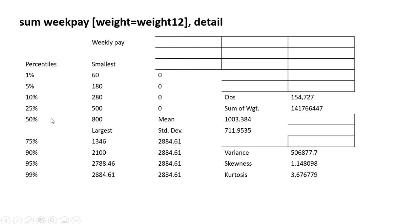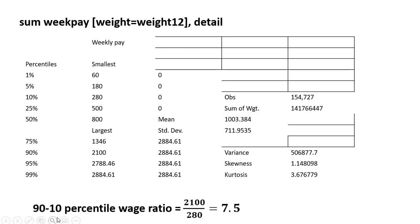We have the percentiles here and the weekly pay at those percentiles. The 90-10 percentile wage ratio in the United States in 2019: the 90th percentile — the top 10% of the wage distribution — had weekly earnings of $2,100. Dividing that by the bottom 10% of $280, we have a 90-10 percentile wage ratio of 7.5.